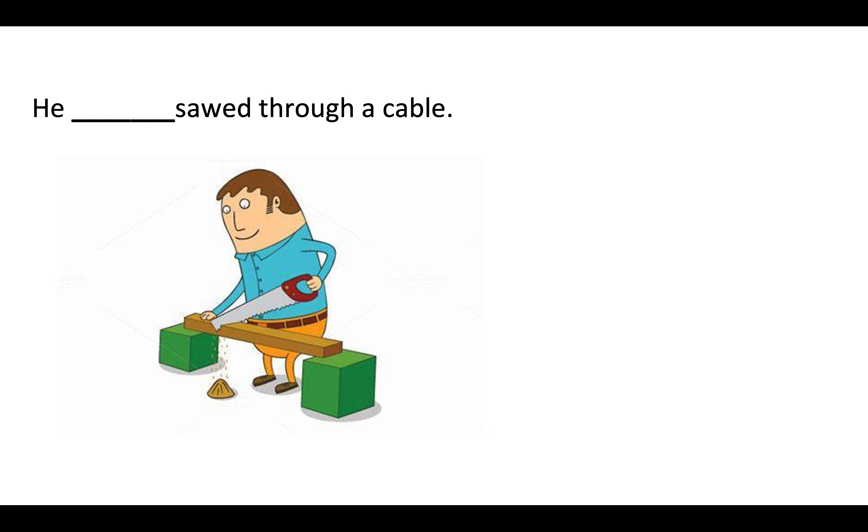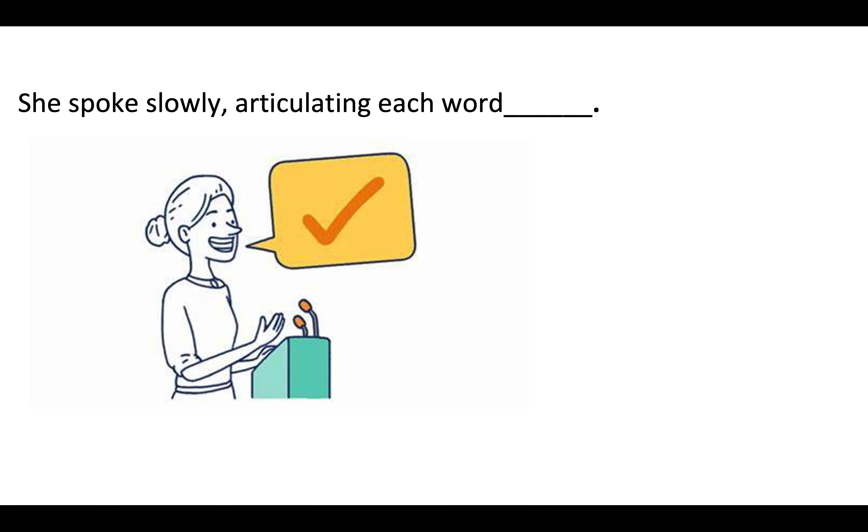Spelling number seven, the word is clearly. She spoke slowly, articulating each word clearly. The word is clearly.